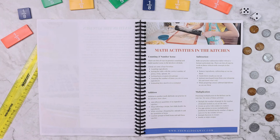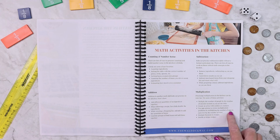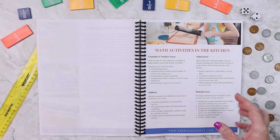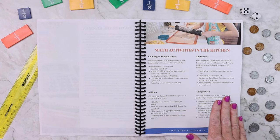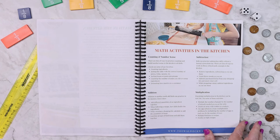Like creating an array with cookies or crackers, using the egg cartons to create multiplication problems by multiplying the number of eggs in each row by the number of rows, doubling or tripling recipes. Like here are real world, just do this. I don't even have to think about it.